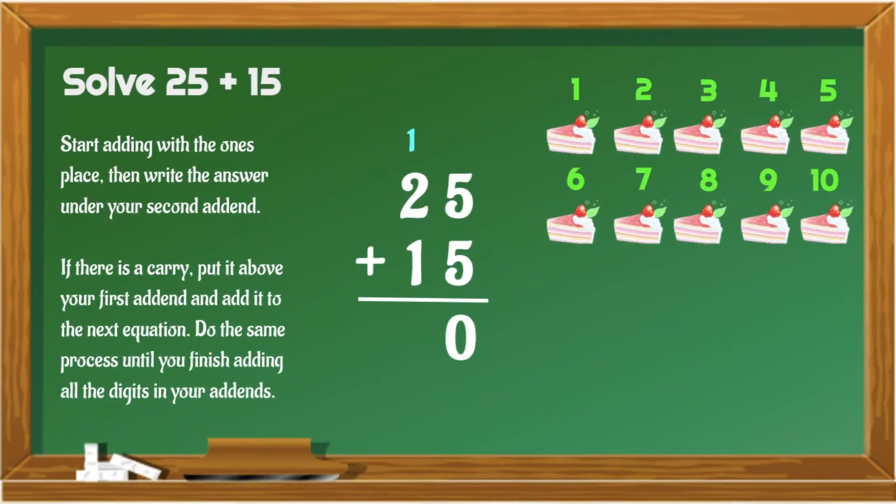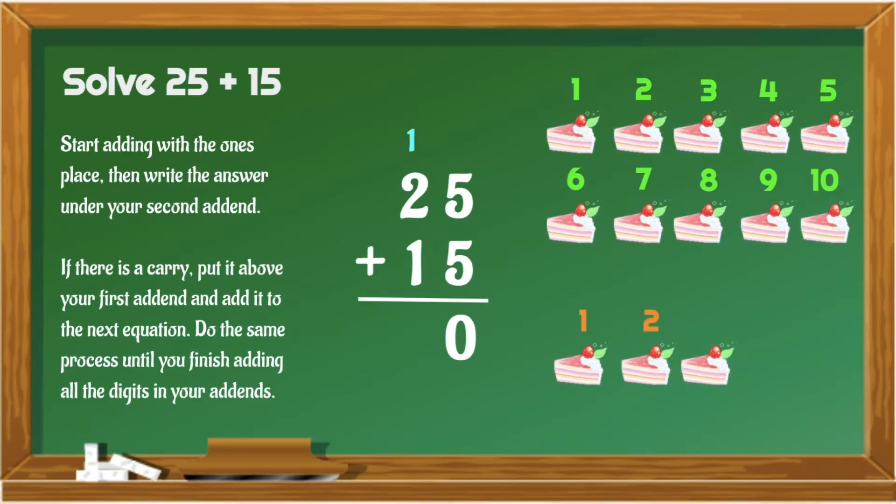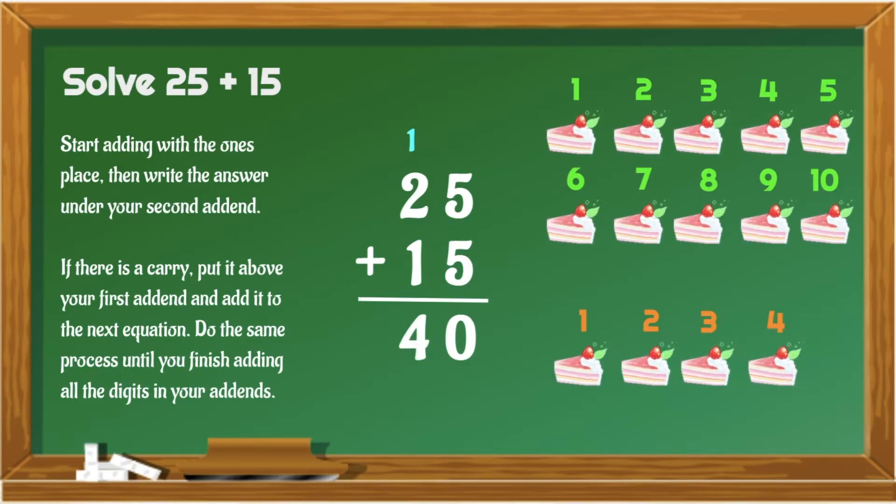Next, let's add 1 plus 2 plus 1. So, from 1, let's count on. 2, 3. Then, add another 1. So, that would give us 4. 25 plus 15 is equal to 40.